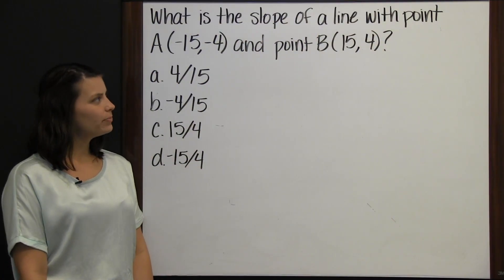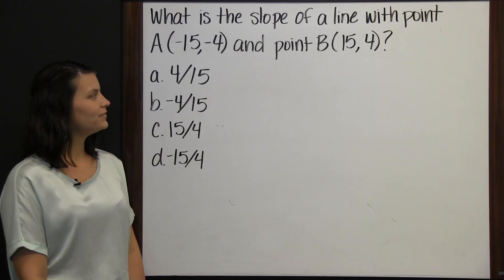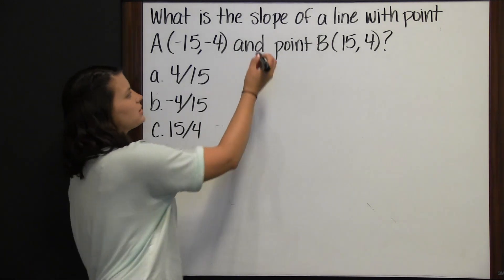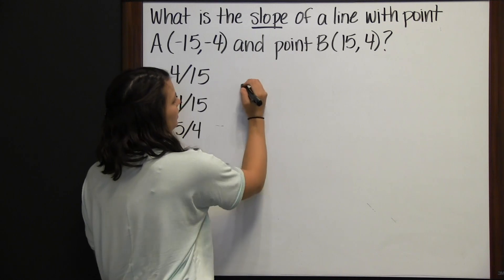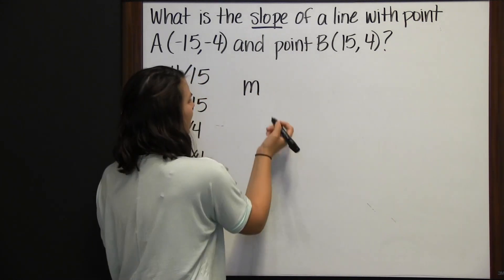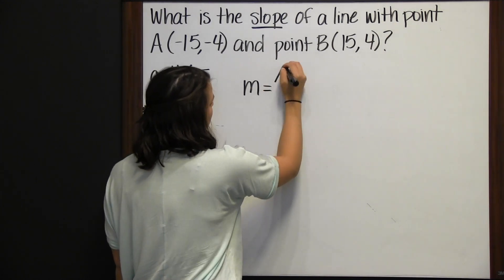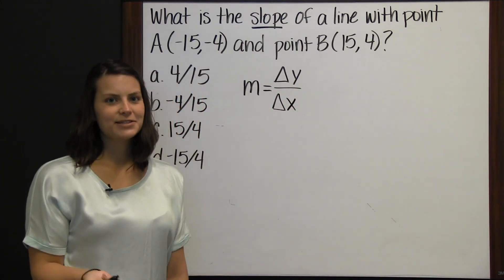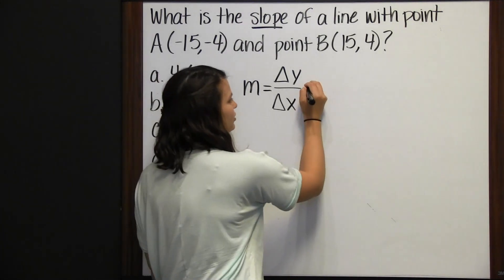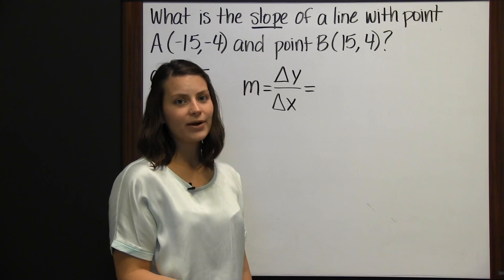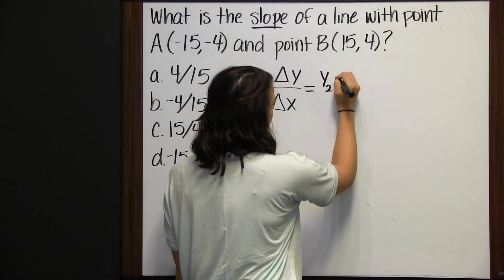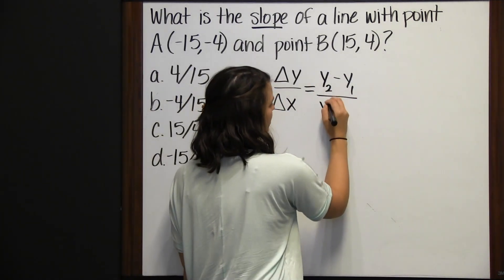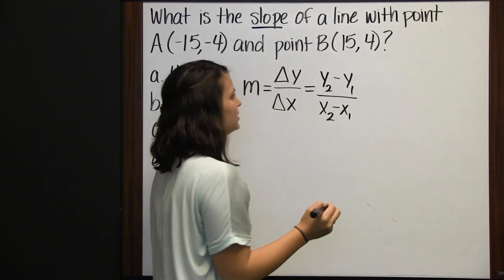What is the slope of a line with point A (negative 15, negative 4) and point B (15, 4)? To find the slope, we use m for slope. The slope is the change in y divided by the change in x. To find the change in y, subtract the y-coordinates: y2 minus y1. To find the change in x, subtract the x-coordinates in the same order: x2 minus x1.